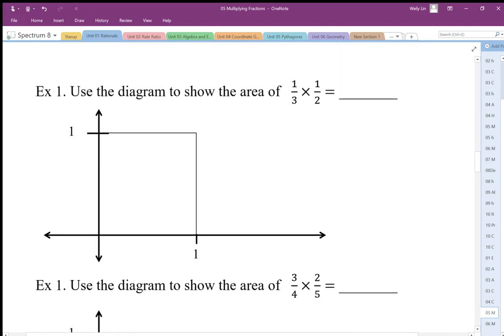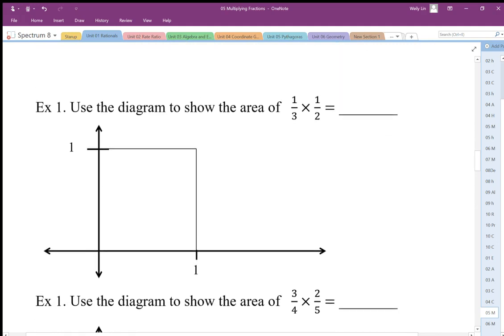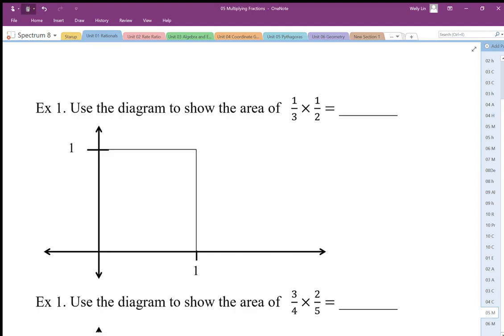So we have a one-third fraction times a one-half fraction. Let's color code this a little bit. So one-third, now it doesn't matter if one-third is along the horizontal or vertical. I'm just going to make it along the horizontal. I'm just going to divide it up into one-thirds here.